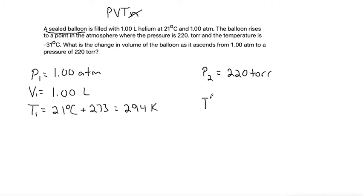And the new temperature T2 is negative 31 degrees C. Again, we can add 273 to turn that into Kelvin. Negative 31 plus 273 is 242 Kelvin.